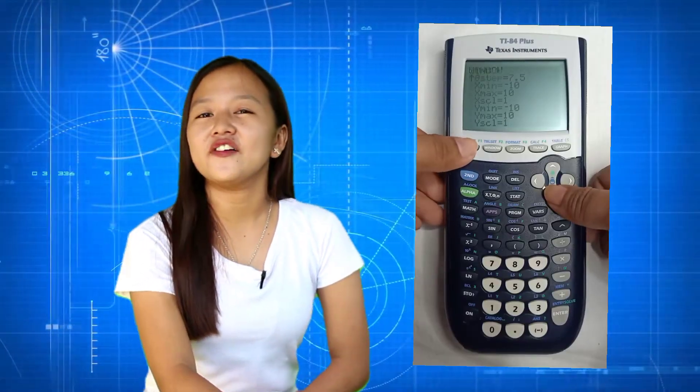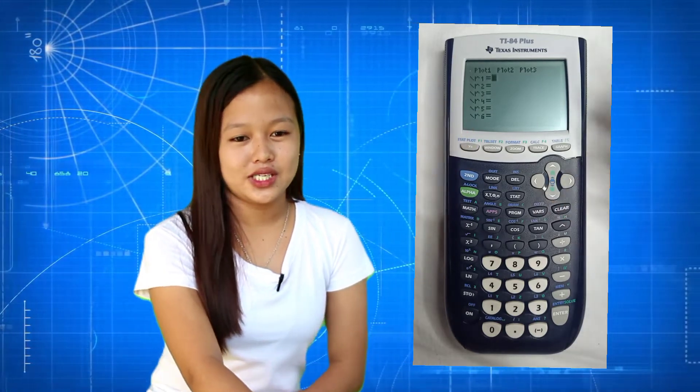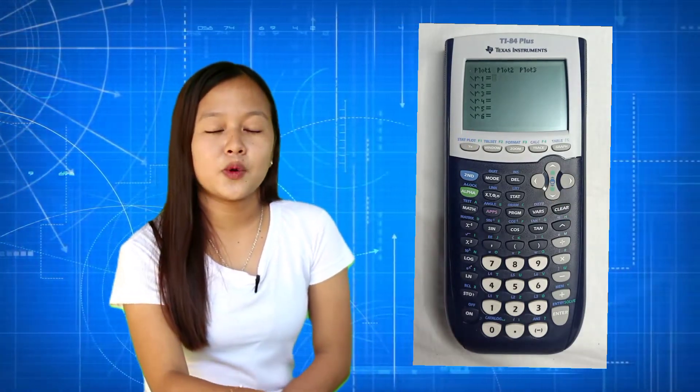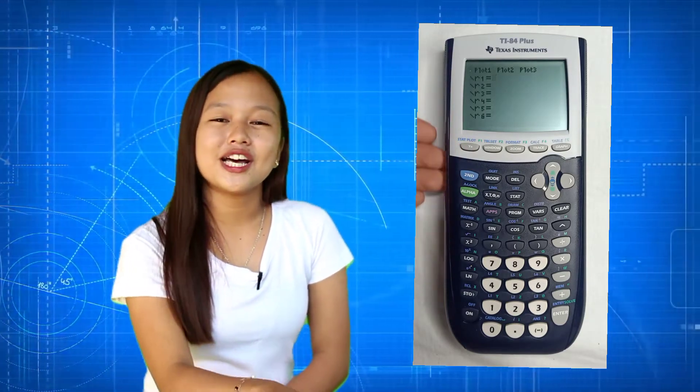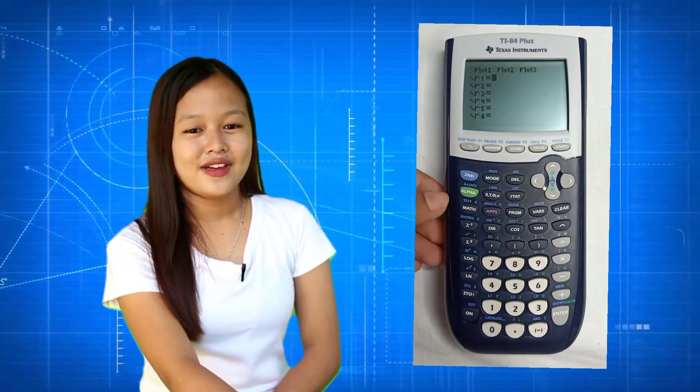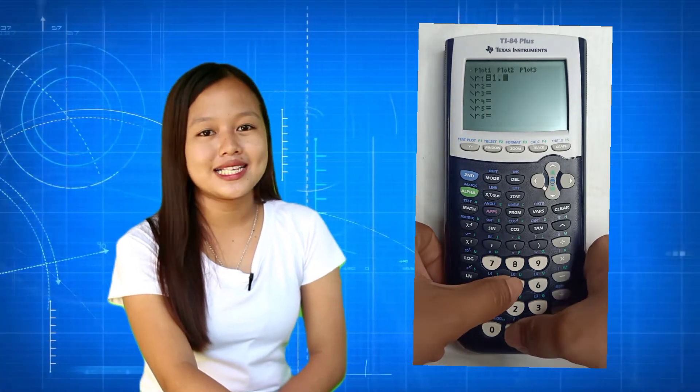Now, let's graph the given polar equations. We go to the y button. Since it is programmed for polar equation, we have the r. Input r equals 1.5. After that, let's press the graph button. We can see that the equation formed a small circle lying in the center.